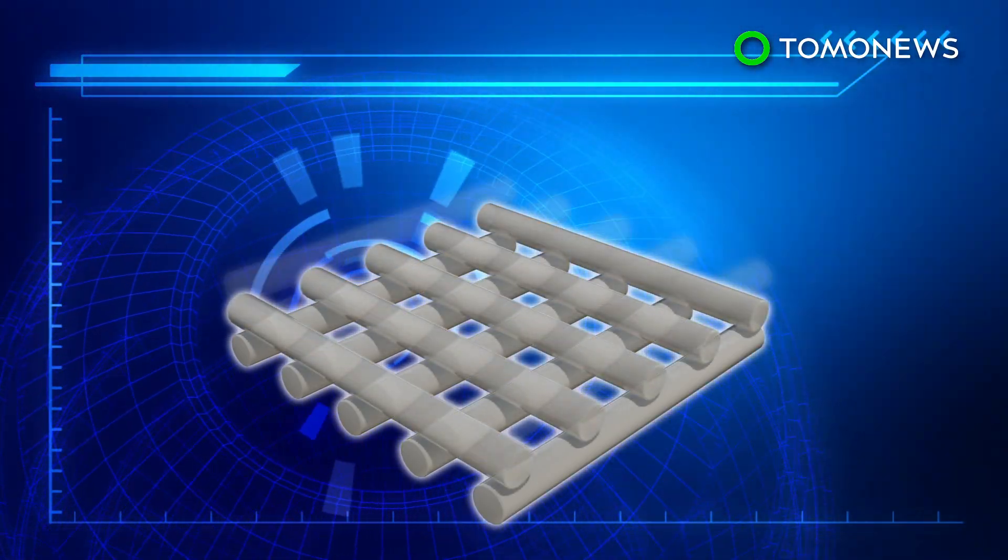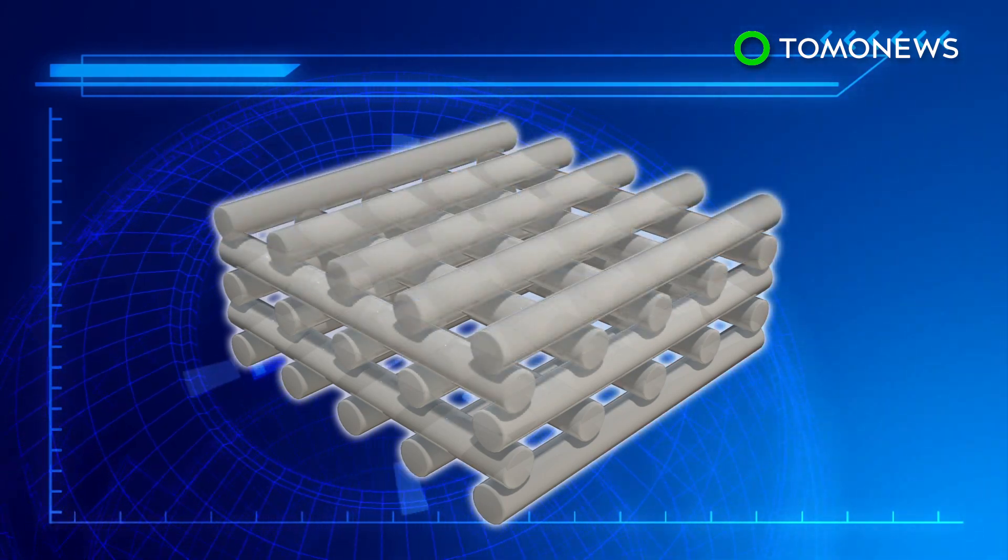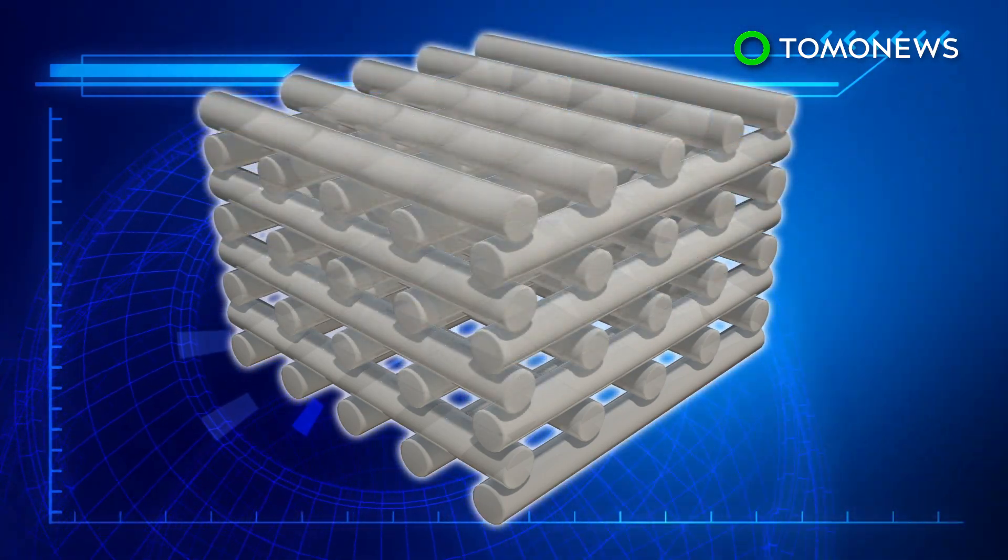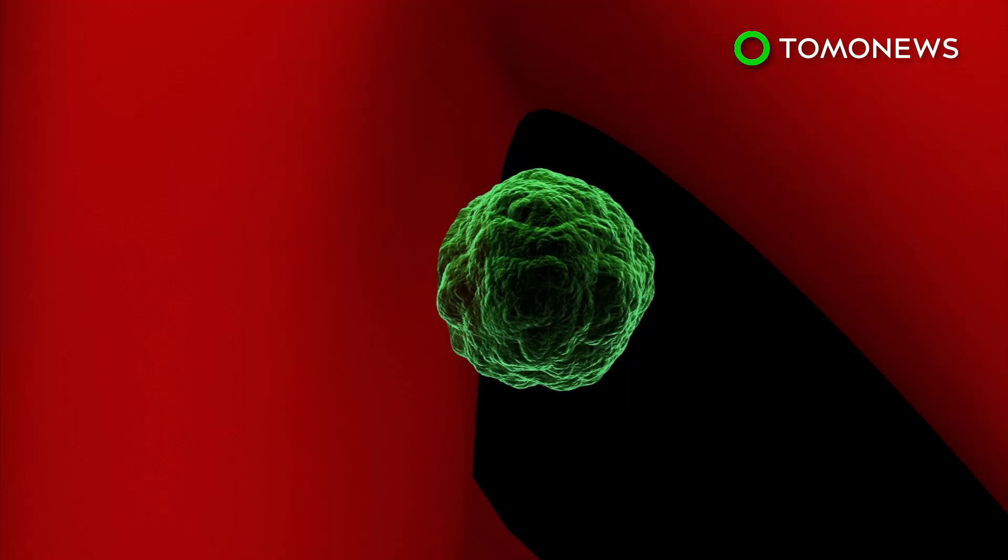The artificial ovary is a 3D-printed, multi-layered scaffold made of gelatin, a biological hydrogel that is strong enough to be self-supporting.